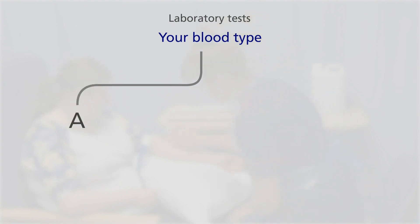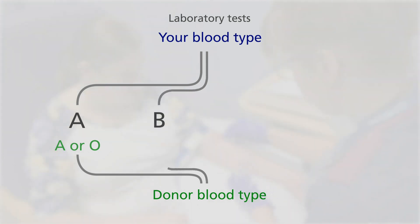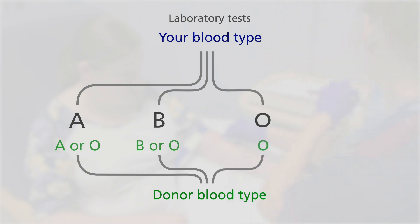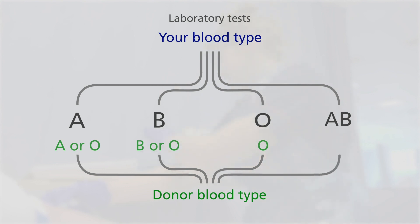If you are blood type A, your donor should have blood type A or O. If you are blood type B, your donor should have blood type B or O. If you are blood type O, the donor must have blood type O. A person with blood type O is called a universal donor because he or she can donate to someone of all blood types. If you have blood type AB, universal acceptor, your donor can have blood type AB, A, B or O.